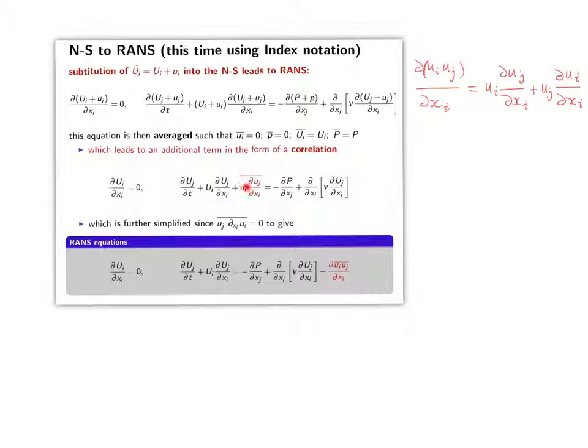So at this point, it's worth looking at this term in a bit more detail and noting that, well, if you have the term DUIUJ over DXI, then using the product rule.